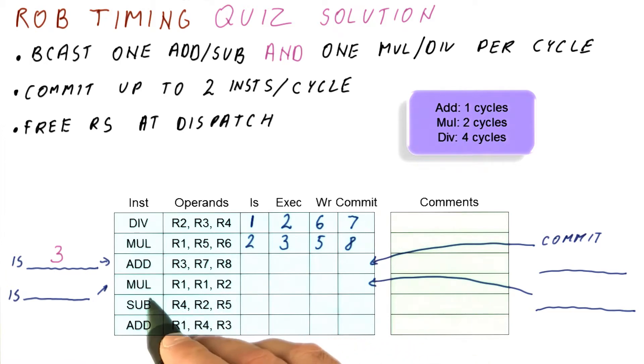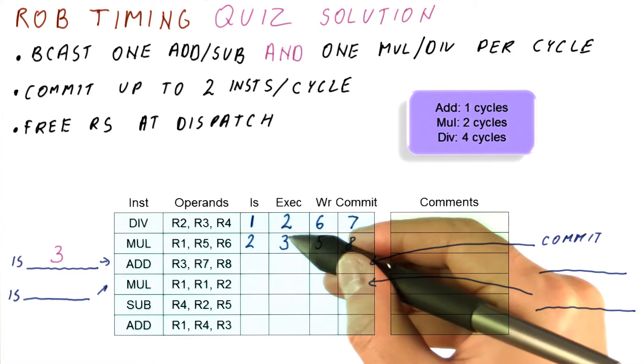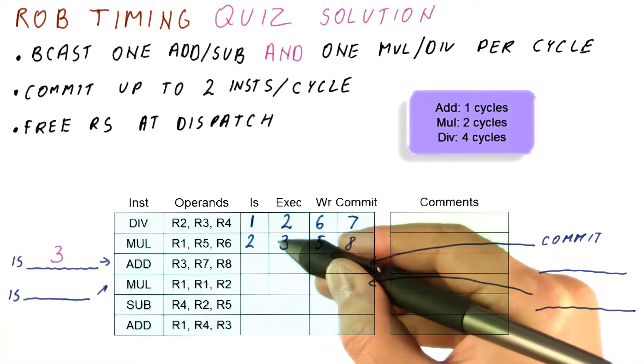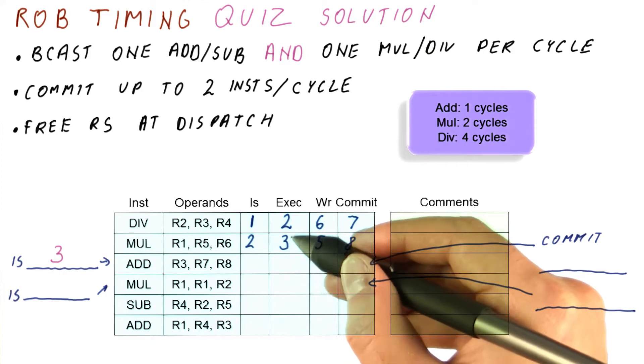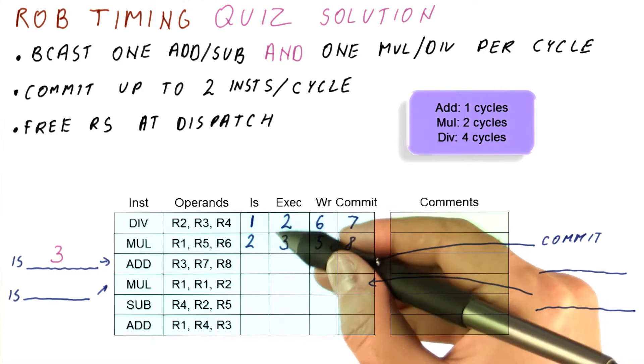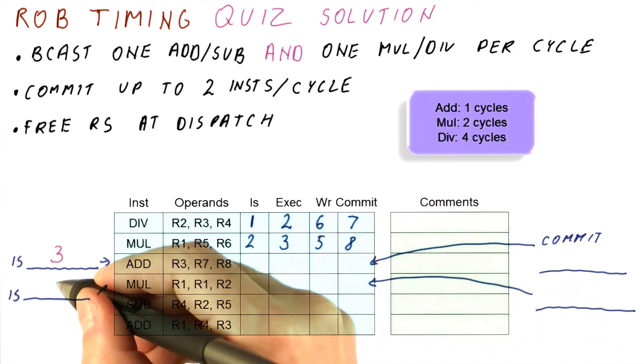And the next instruction, multiplication, will try to issue in cycle four. The question is whether we have a free reservation station. Indeed we do, because we have begun executing the multiplication in cycle three here, that has freed one of the two reservation stations we were holding. So at cycle four, both of the multiply divide reservation stations are actually available, so we can issue in cycle four.